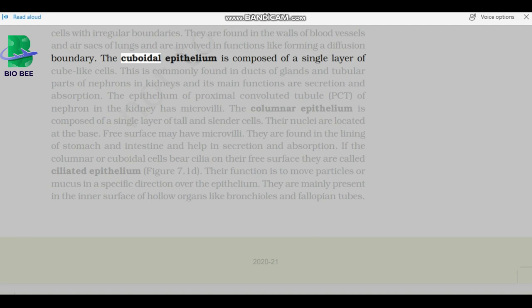The cuboidal epithelium is composed of a single layer of cube-like cells. This is commonly found in ducts of glands and tubular parts of nephrons in kidneys, and its main functions are secretion and absorption. The epithelium of proximal convoluted tubule, PCT, of nephron in the kidney has microvilli.